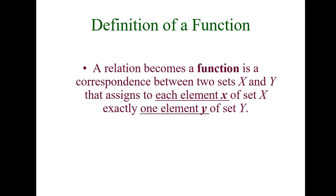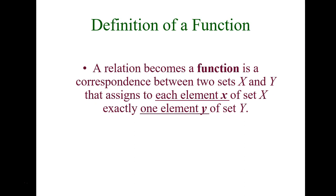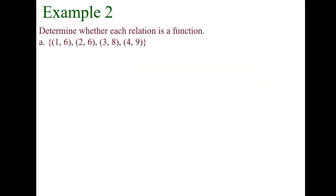When does a relation become a function? Usually in math we work with functions, so what makes something a function? A relation is a function — this is the formal definition — if the correspondence between two sets x and y assigns to each element of x exactly one element of y. What I want you to think about is: as long as each input value only maps to one output value, then we're okay for a function.